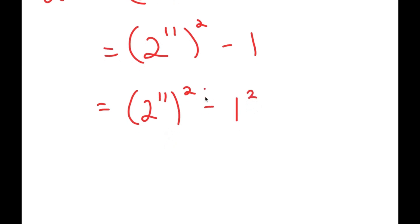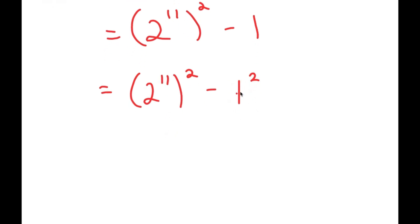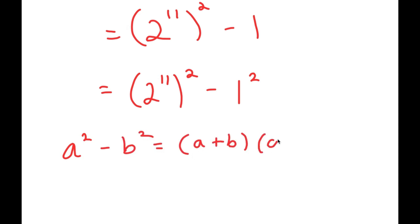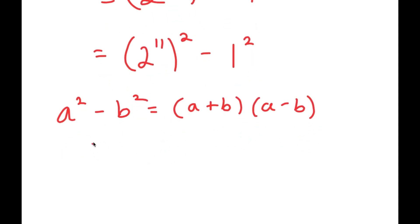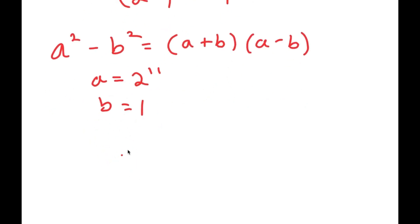The reason I rewrote 1 as 1 squared is because now I can use the property a squared minus b squared is equal to a plus b times a minus b. Here, a is 2 to the power of 11 and b is 1. So now I get 2 to the power of 11 plus 1, times 2 to the power of 11 minus 1.